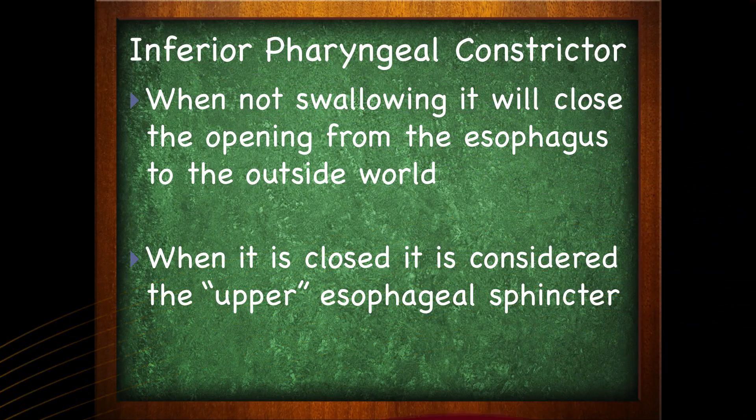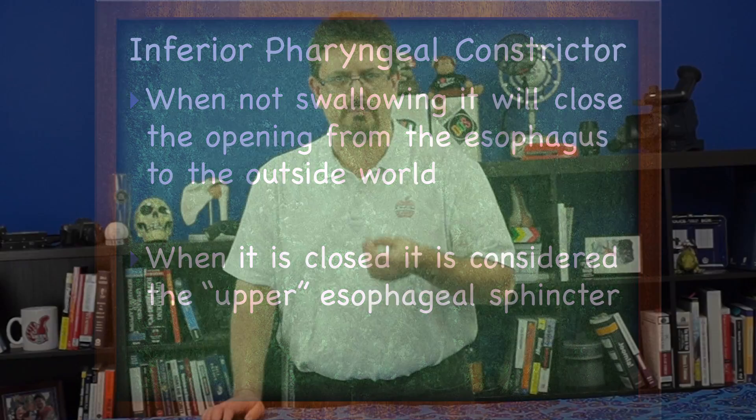Now this is not an anatomical sphincter — not like the muscles around your mouth, eyes, or rectum, which are anatomical sphincters. This is a physiological sphincter. The difference is that when you're dead, the sphincter disappears; a physiological sphincter isn't there anymore. It's done by function, not anatomy. While it is the inferior pharyngeal constrictor, it is also considered the upper esophageal sphincter — and again, it's not an anatomical sphincter, it's a physiological one.